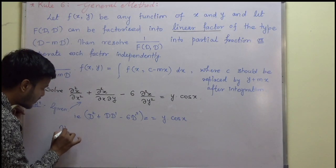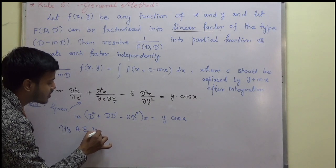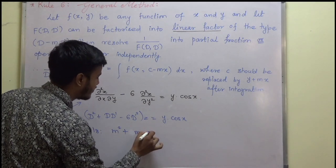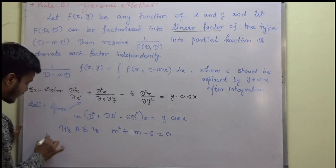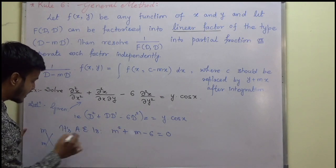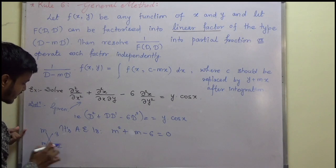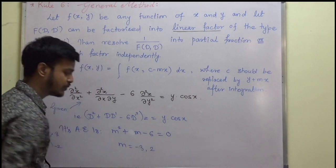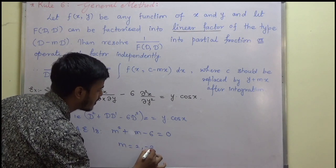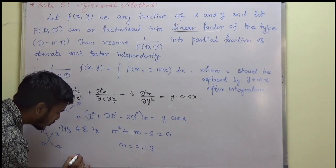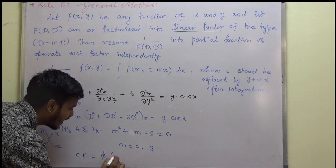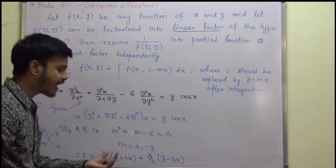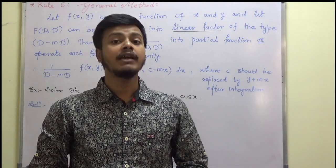We write down the auxiliary equation: m² + m minus 6 equals 0. Factoring: m times m, and minus 6 as 3 times minus 2, giving minus 2m plus 3m equals plus m. So m equals minus 3 and plus 2. The complementary function is therefore φ₁(y + 2x) + φ₂(y minus 3x), where φ₁ and φ₂ are arbitrary functions.